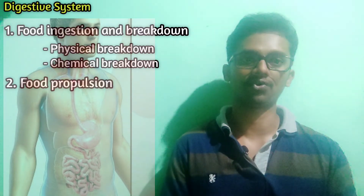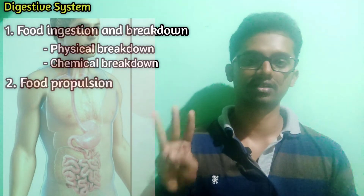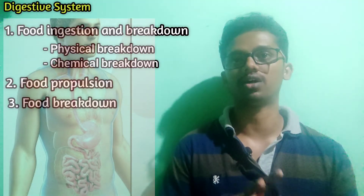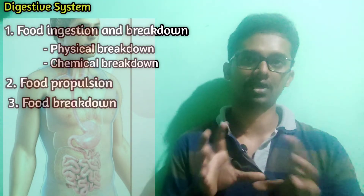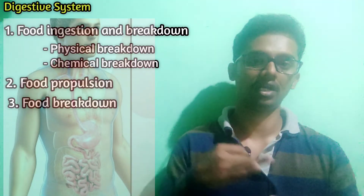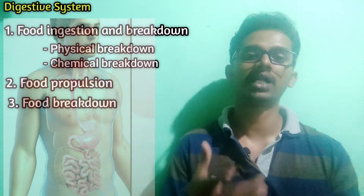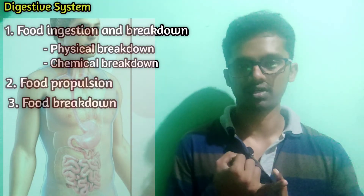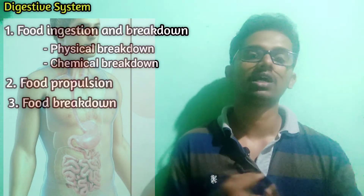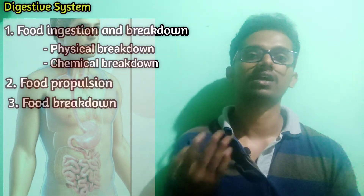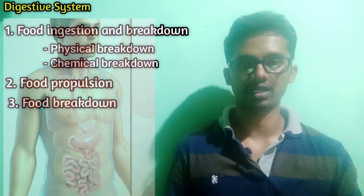The second step is food propulsion, also known as peristalsis — the movement of food from the esophagus to the stomach. The third step is food degradation or breakdown, where large masses of food are broken down into simpler units such as monosaccharides, amino acids, and fatty acids and glycerol. This is achieved by digestive enzymes such as pepsin, pepsinogen, trypsin, and lipase.